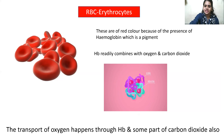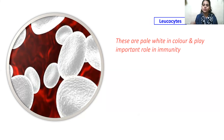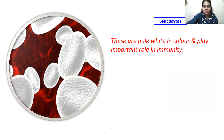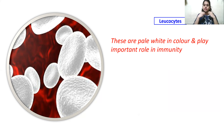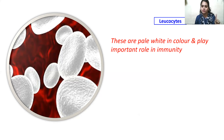Coming to the next cell, that is WBCs, which are also called leukocytes. These are pale white in color and they play a very important role in immunity. Whenever our body gets attacked by a pathogen, our body shows a response. When a pathogen enters our body, our body shows an immune response, which is provided by WBCs. So WBCs try to fight against that pathogen and maintain the immunity of our body.